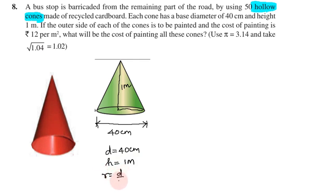Radius is diameter divided by 2, so 40 divided by 2 gives 20 cm. Actually, height is 1 meter, so if we need to convert to meters we divide by 100.